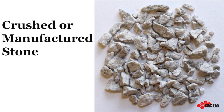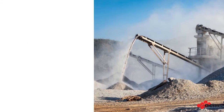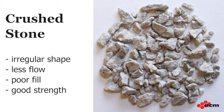Here we see crushed or manufactured stone. These are mined in quarries and then fed through crushers to reduce the size. Notice that the crushed aggregate has more irregular shapes with sharper edges, and we also see some flat, elongated pieces. Angular crushed aggregates don't flow well, which means we have to work harder to get correct fill and density. On the other hand, the rougher surfaces allow particles to interlock together, and cement can more easily bind to the aggregate surface, so the compressive strength may be higher.